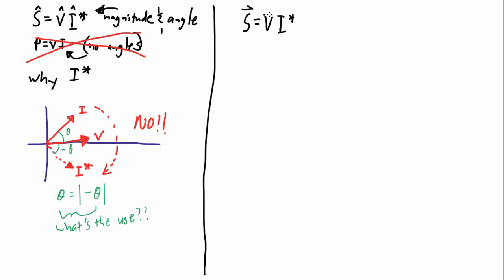The real issue behind all of this is when. When do we apply the S equals VI* conjugate formula, as opposed to when do we need to apply the more simplified P equals VI formula?